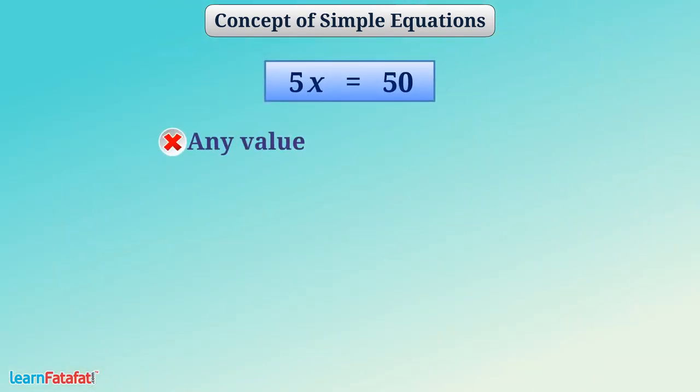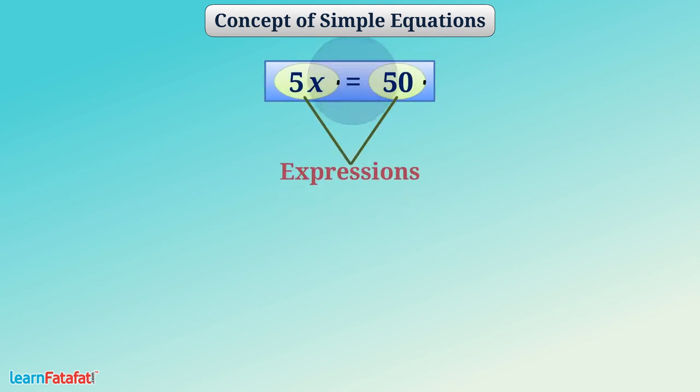Here, we cannot write any value for x. There should be specific value of x which when multiplied with 5, gives 50. This means that we have put a condition on the value of variable. The condition is that two expressions should have equal value. Such an expression which put condition on the value of variable is called an equation.